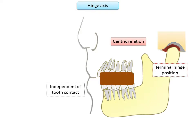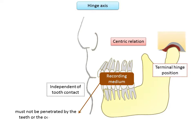When trying to obtain an accurate centric interocclusal record, we need to ensure that the recording medium is not penetrated by the teeth or the occlusal rims. To avoid penetration, at least in the case of edentulous patients, we need to obtain a centric interocclusal record in an open relationship. This means the patient needs to move the jaw along the same arc of closure; otherwise the record will be futile. Thus, it is impossible to check a centric interocclusal record without an axis mounting.